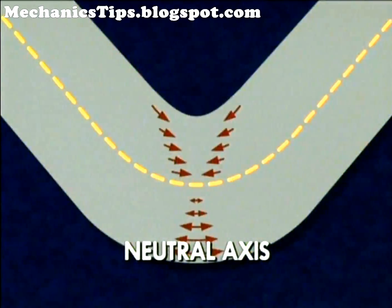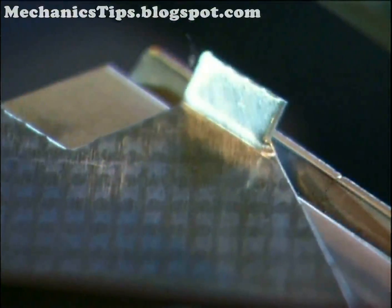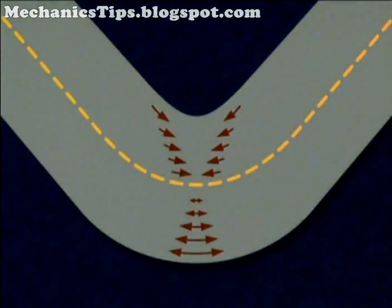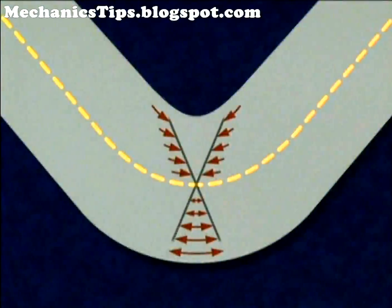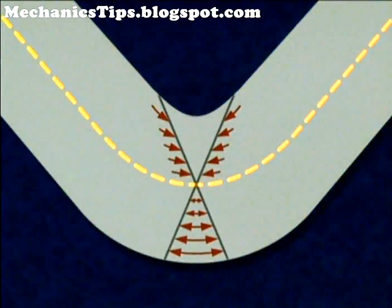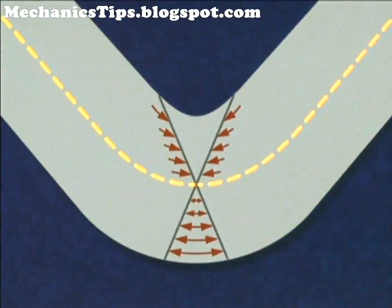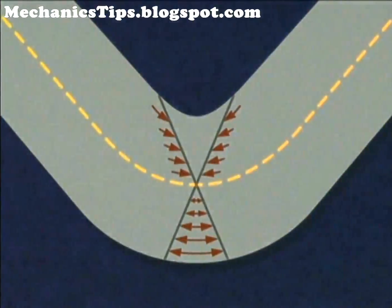The neutral axis is important since bending operations are calculated from its location. The extent to which a material deforms, whether in compression or tension, is proportional to the material's perpendicular distance from the neutral axis.